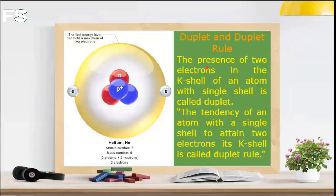This arrangement of two electrons in the K-shell is called duplet. It is chemically inert because it has a complete number of electrons in its K-shell. Thus, the presence of two electrons in the K-shell of an atom with only a single shell is called duplet.